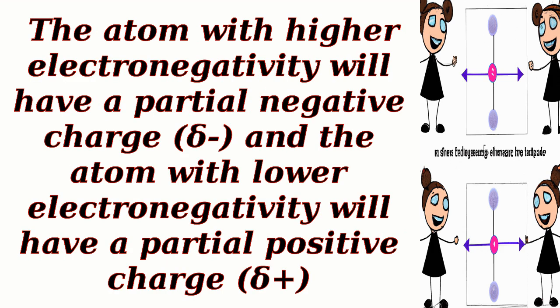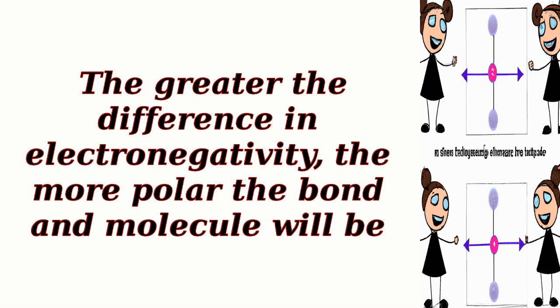The atom with higher electronegativity will have a partial negative charge (delta minus), and the atom with lower electronegativity will have a partial positive charge (delta plus). The greater the difference in electronegativity, the more polar the bond and molecule will be.